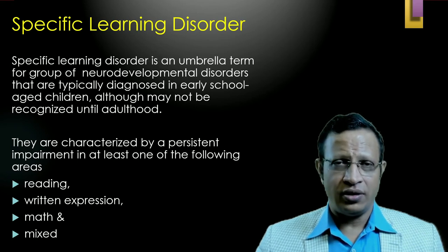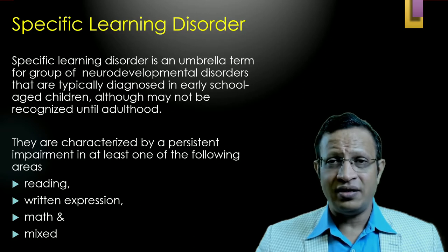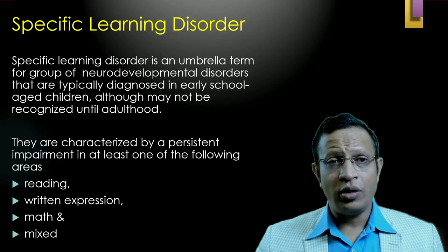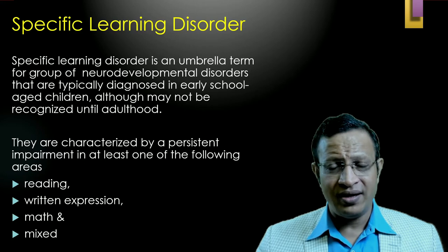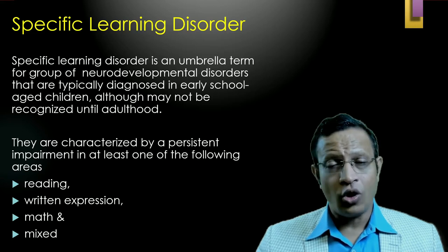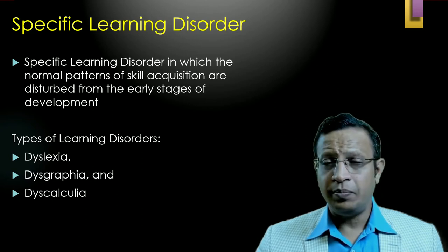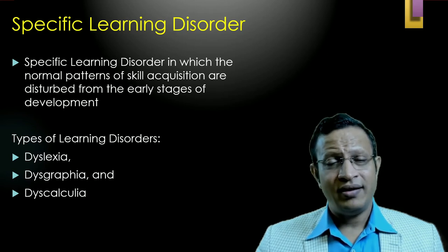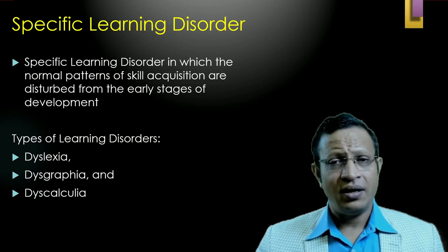Dysgraphia comes under Specific Learning Disorder. SLD is an umbrella term for a group of neurodevelopmental disorders that are typically diagnosed in early school age children, although it may not be diagnosed till adulthood. They are characterized by persistent, pervasive impairment in at least one of the following areas: reading, writing, mathematics, or a combination. There are three important SLD categories included in DSM-5 and ICD-11: dyslexia, dysgraphia, and dyscalculia.